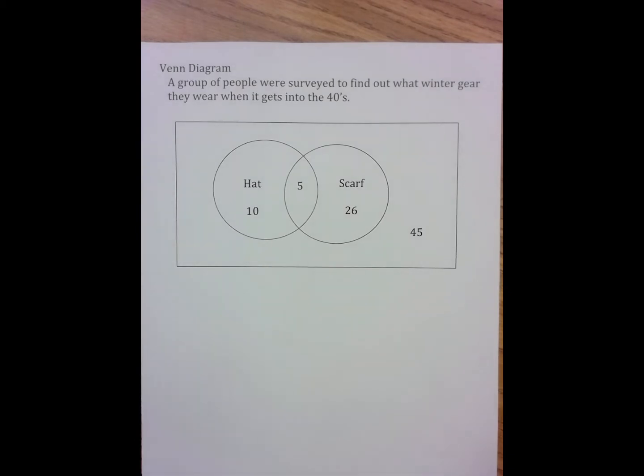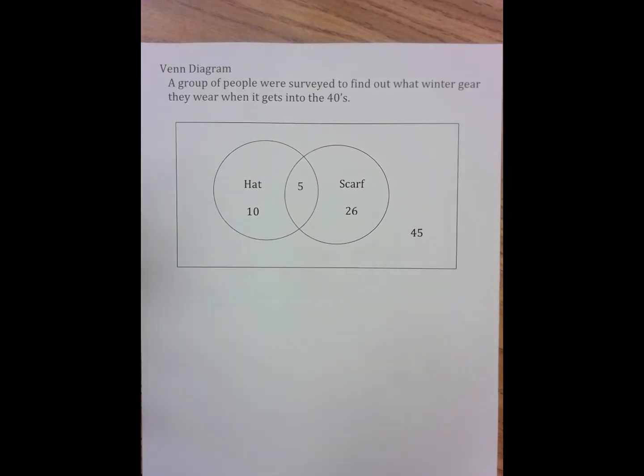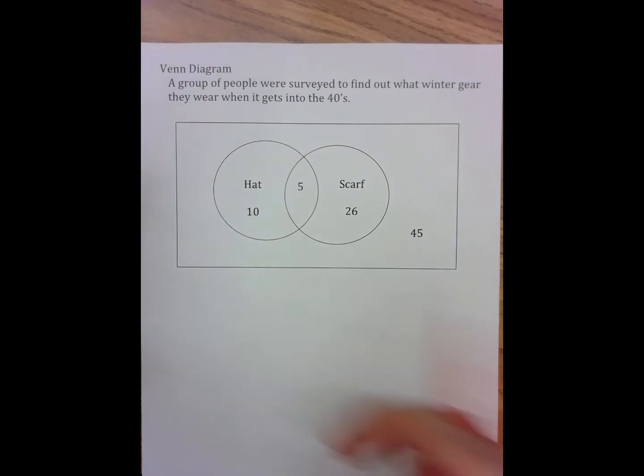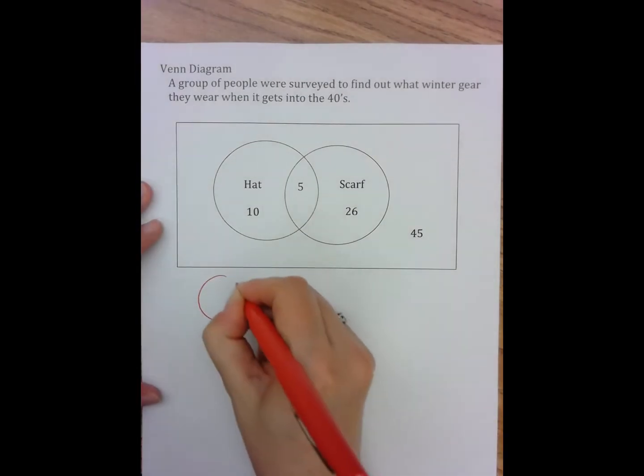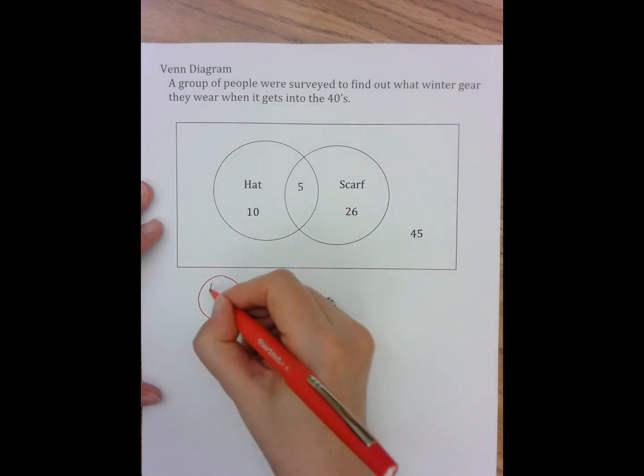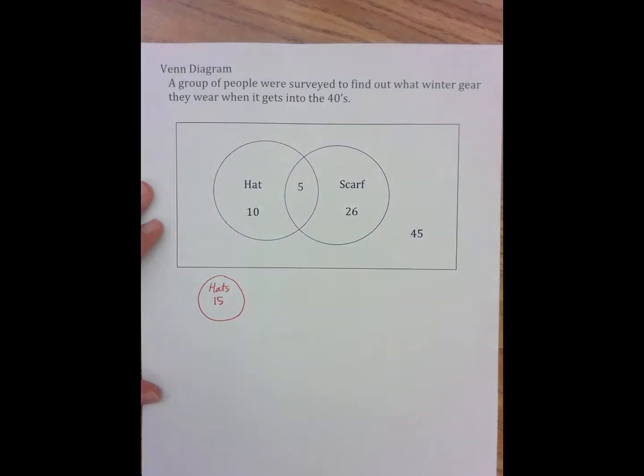The first thing it would be really great to do is to make sense of this diagram. So it turns out that there's a full circle on this side where it has 15, and that means that 15 people said yes to hats.